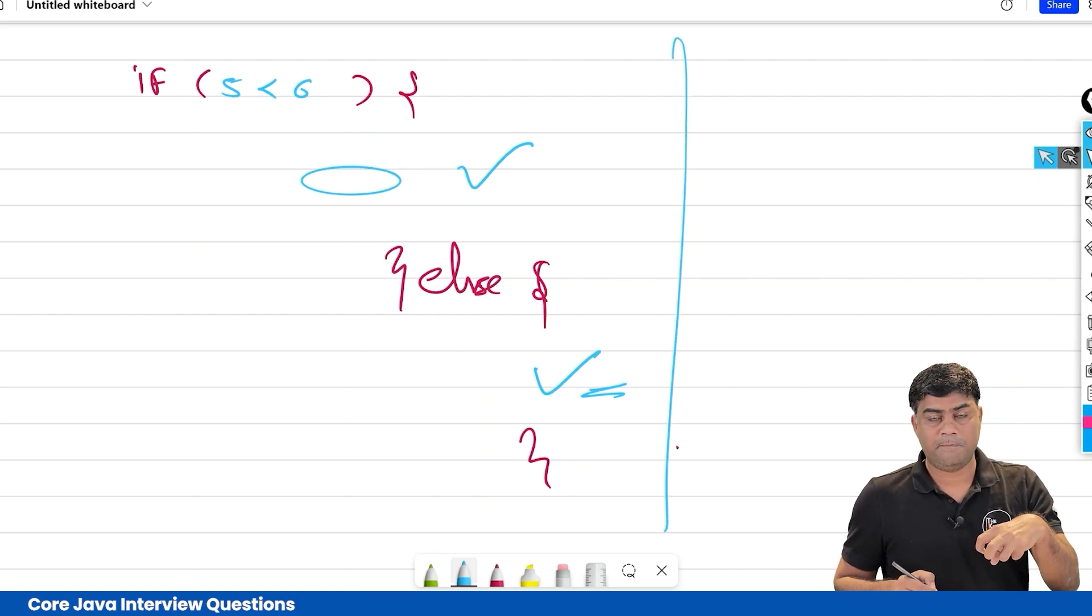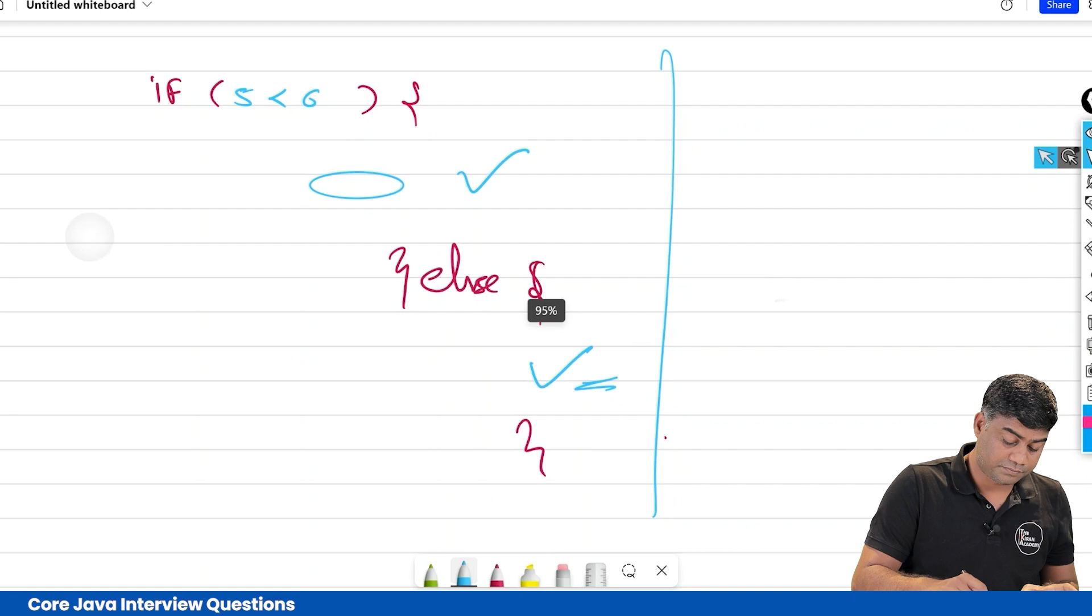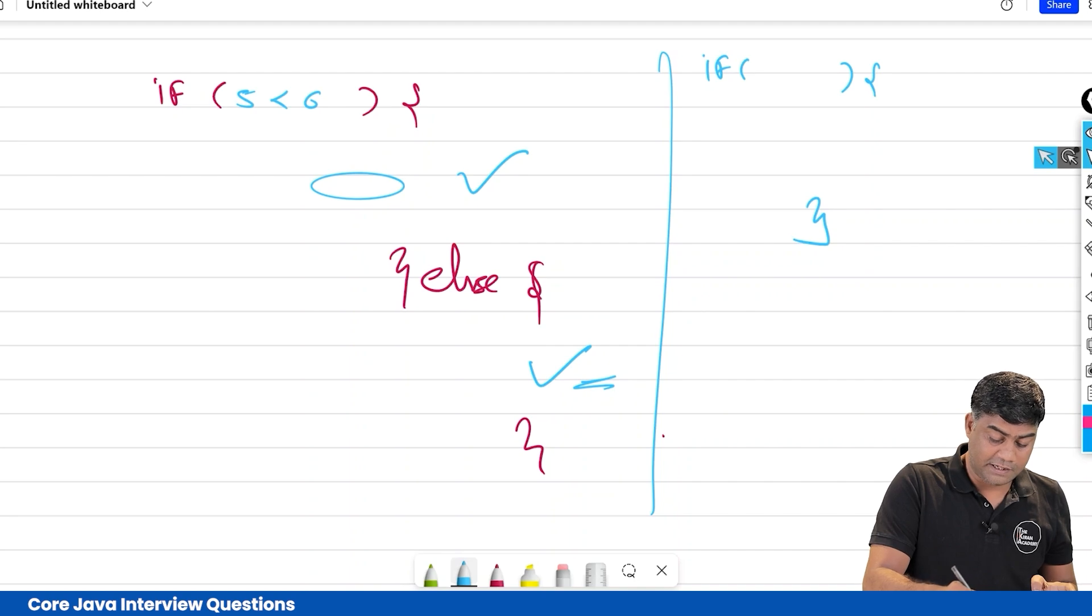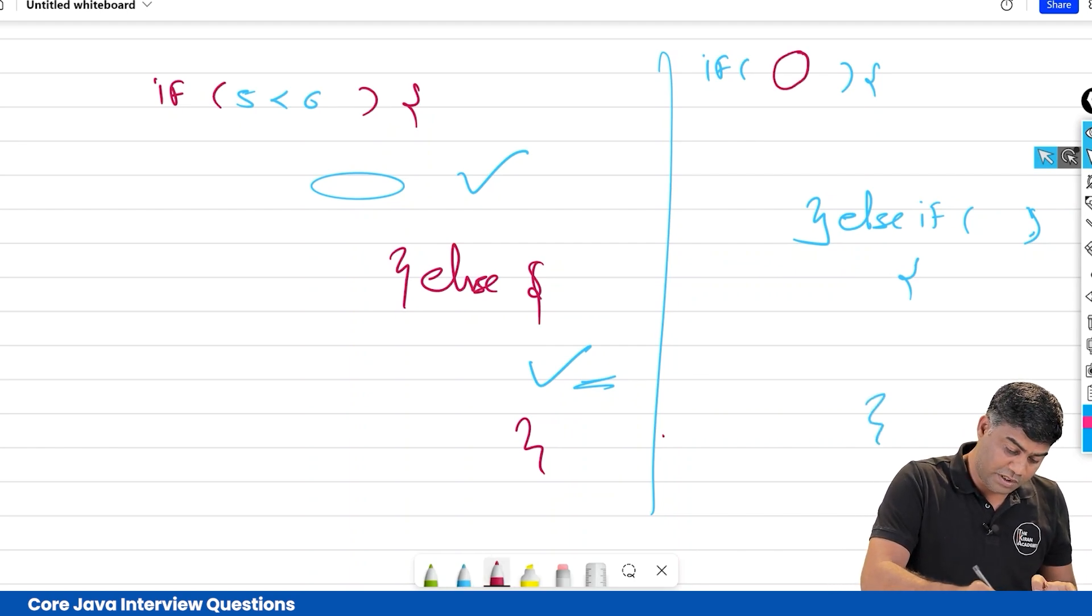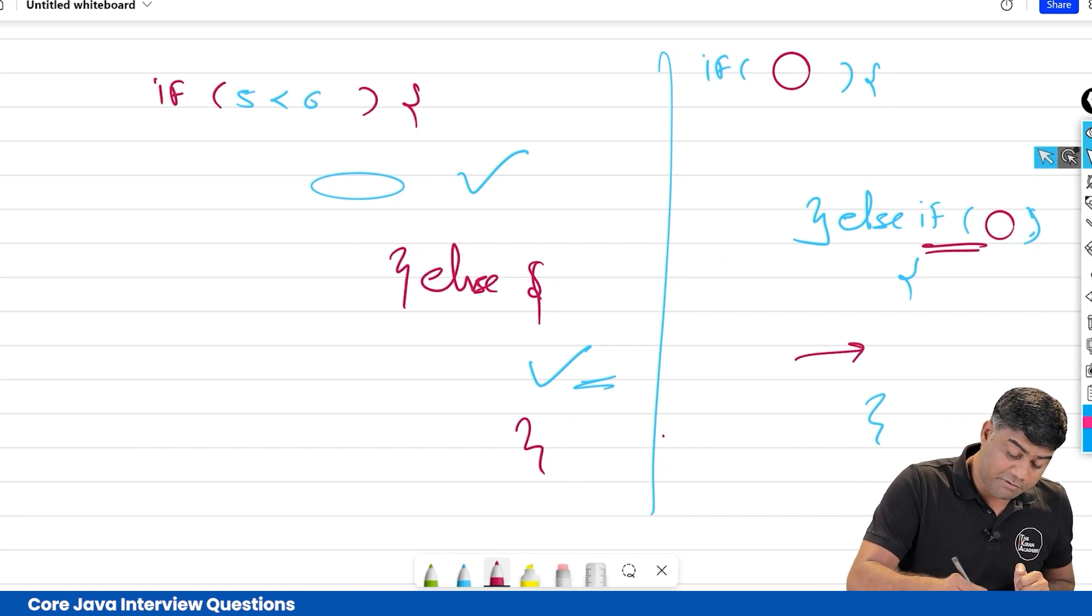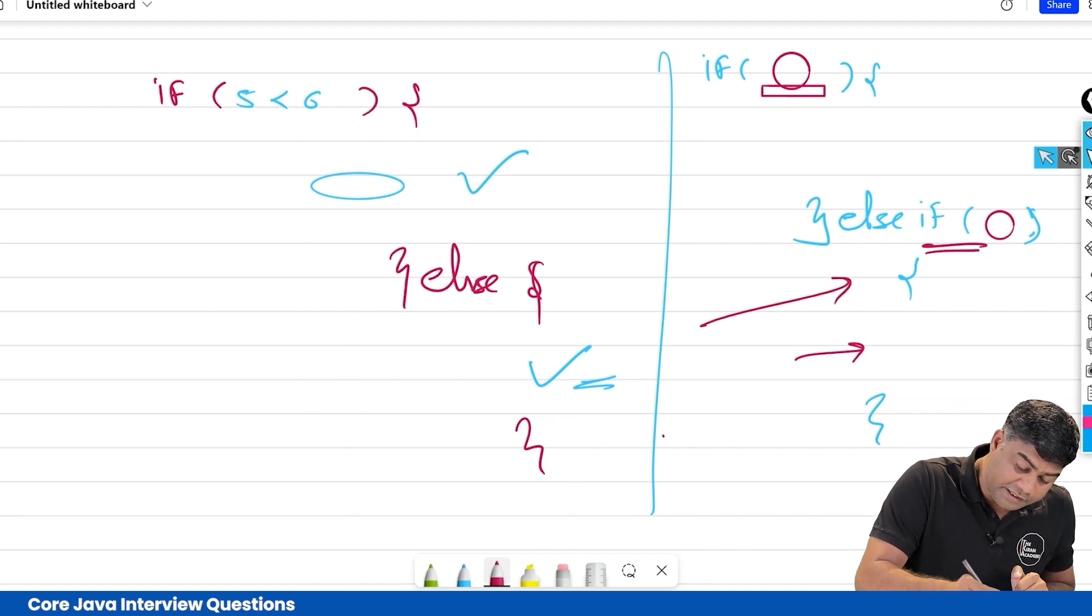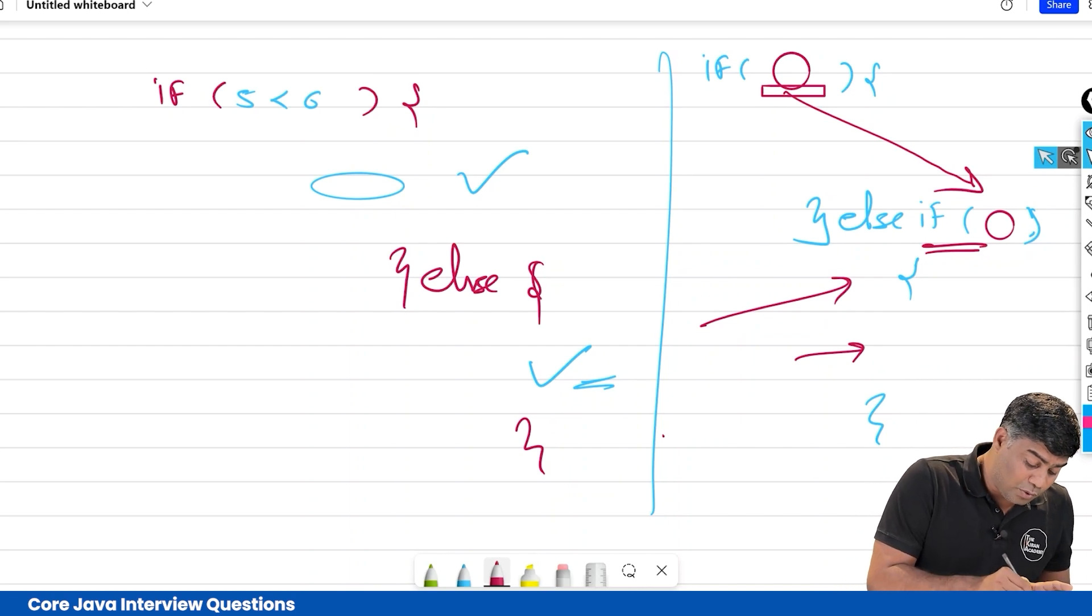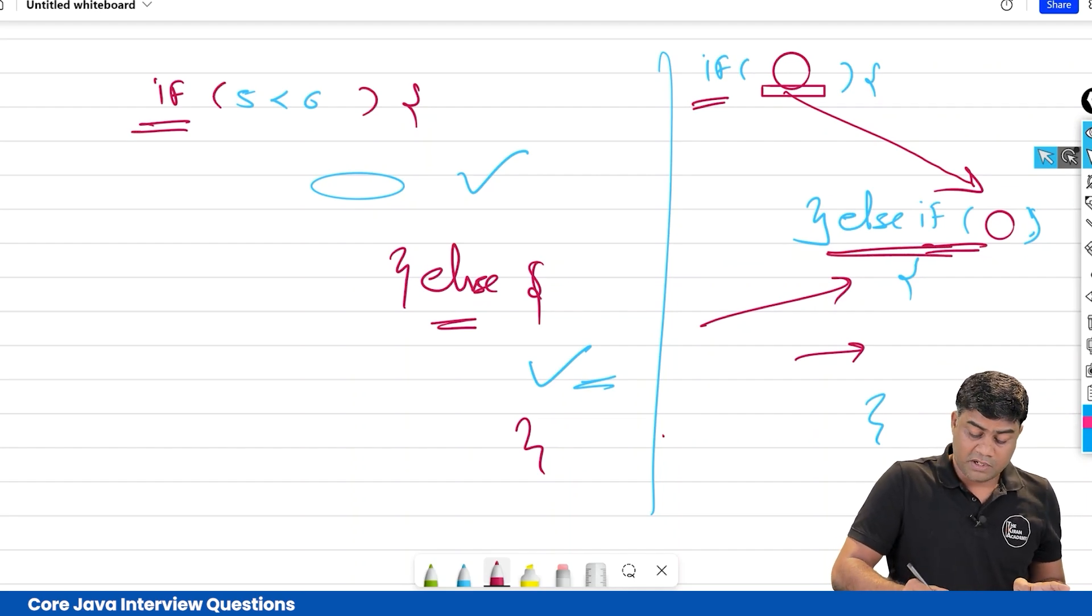But in our question, else if is mentioned. What does this mean? If some condition, and then else if with another condition. So here you are putting two conditions - one here and another here. If this is true, then do this. But remember, it will never come directly here. First this gets evaluated, then only the next part will be executed. It's very simple - if, else if, else if. Remember these two both types.